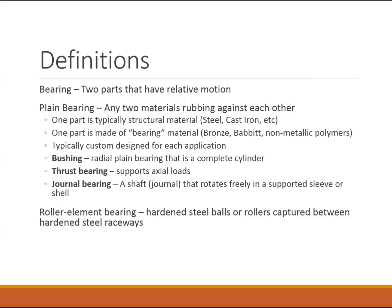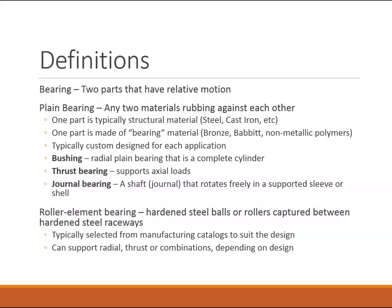The other type of bearing we consider is the roller element bearing. These are almost always composed of hardened steel balls or rollers captured between hardened steel raceways, and the translation of motion comes from rolling — giving you the effect of wheels working to reduce friction. These are very rarely designed custom for an application; much more often they are selected from manufacturing catalogs. With a plane bearing you design the bearing to match your shaft, but with a roller element bearing you design your shaft to fit a particular bearing.